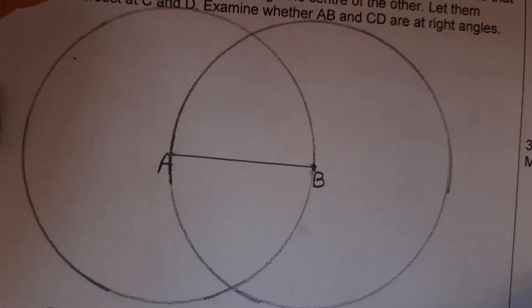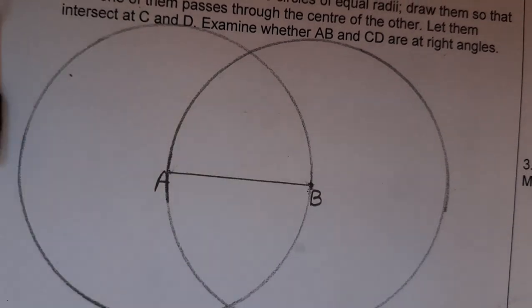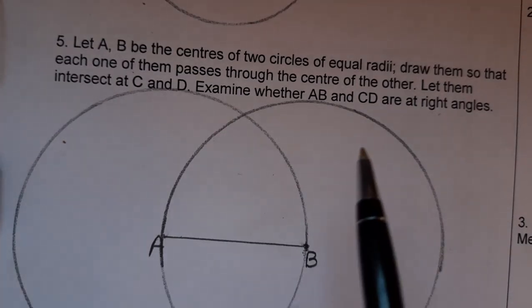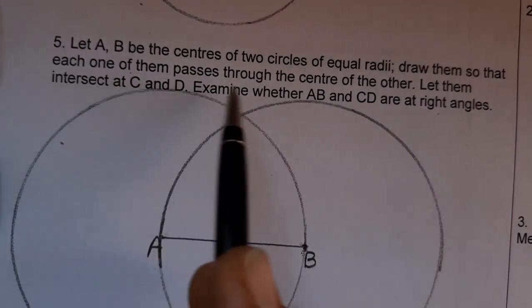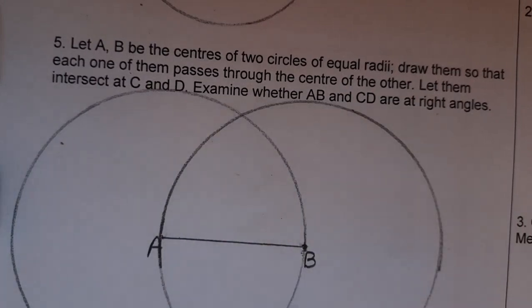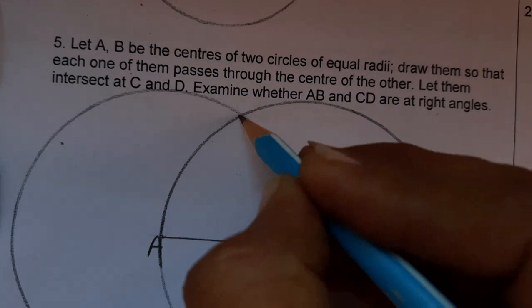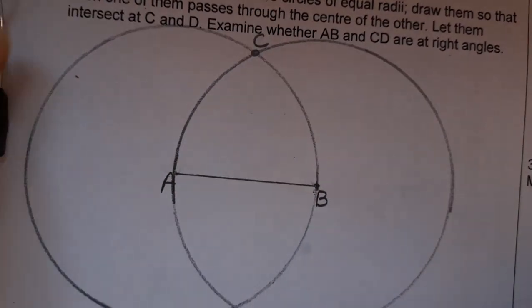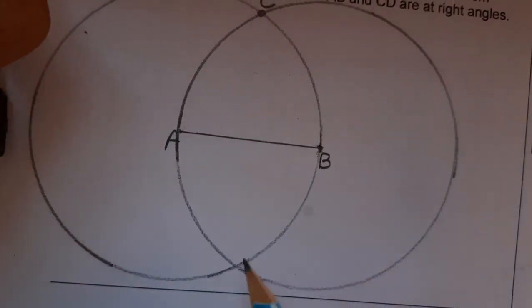We have made the second circle also. Our second circle is also ready. Now the question says let them intersect at C and D. Where do they intersect? This is C, and give this name as D. This is D.